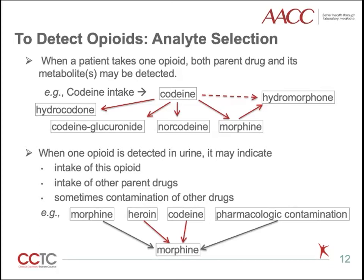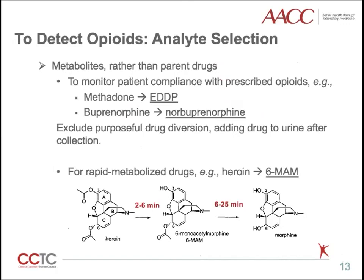On the other hand, when one opiate is detected in urine, it may indicate either the intake of that opiate, or intake of other parent opiates, or sometimes contamination during drug production. One common example: the detection of morphine may occur when a patient takes morphine, heroin, or codeine due to metabolism, or sometimes just due to pharmacological contamination. For some conditions, opiate metabolites rather than parent drugs are used as biomarkers of opiate usage.